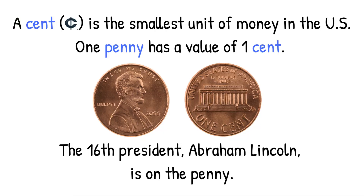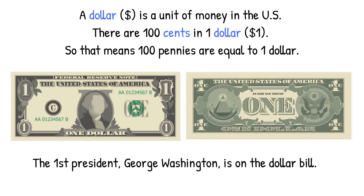A cent is the smallest unit of money in the U.S. One penny has a value of one cent. The 16th president, Abraham Lincoln, is on the penny. A dollar is a unit of money in the U.S. There are 100 cents in one dollar, so that means 100 pennies are equal to one dollar.